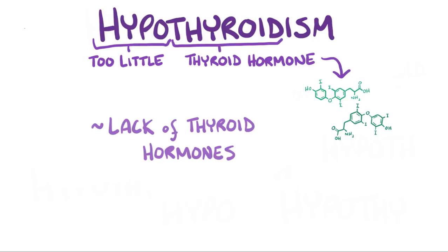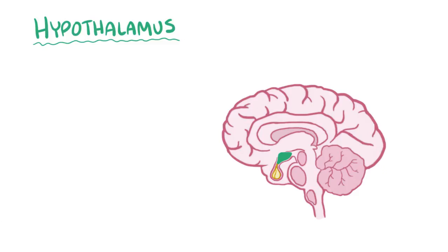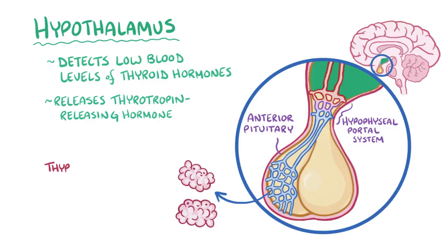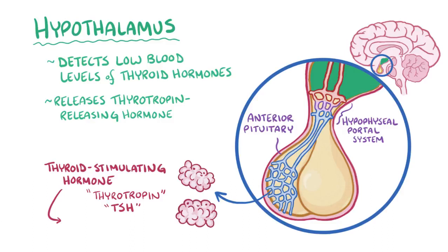Normally the hypothalamus, which is located at the base of the brain, detects low blood levels of thyroid hormones and releases thyrotropin-releasing hormone into the hypophysial portal system, which is a network of capillaries linking the hypothalamus to the anterior pituitary. The anterior pituitary then releases thyroid-stimulating hormone, also called thyrotropin, or just TSH.